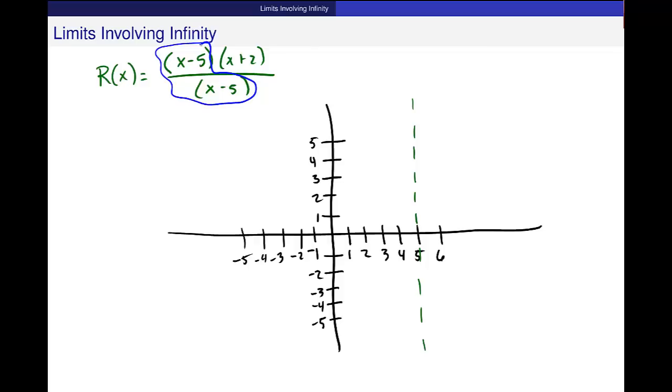If you plug in any other point in the domain of the real line, except for x equal to 5, that part of the function is equal to 1. So this thing looks like x plus 2, exactly like x plus 2. So let me graph it.